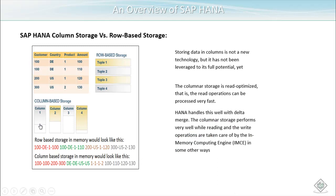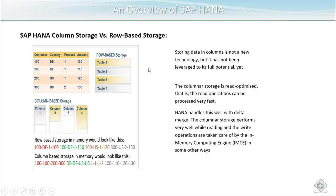The difference between column storage and row storage: storing data in columns is not a new technology, but it has not been leveraged to its full potential yet. In SAP HANA it is fully utilized. Column storage is read-optimized, meaning read operations can be processed very fast. In a typical row-based storage, we store data tuple by tuple — tuple 1, tuple 2, tuple 3, tuple 4 — all stored in sequence.